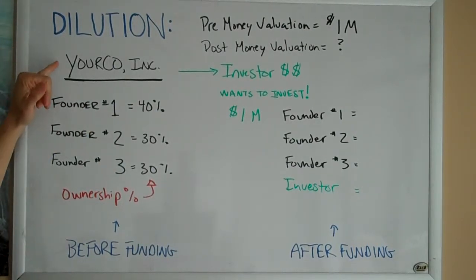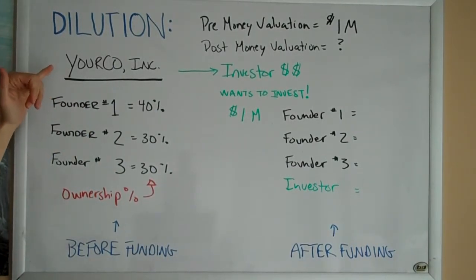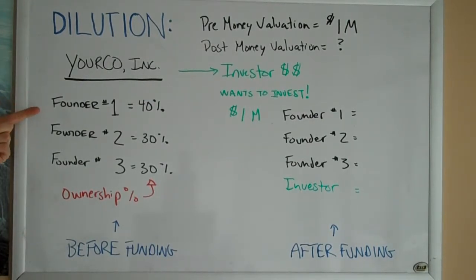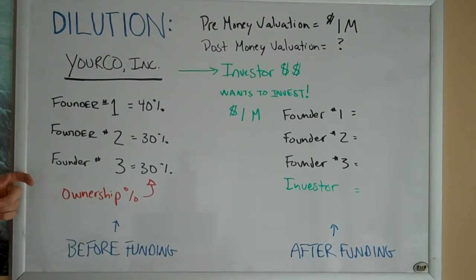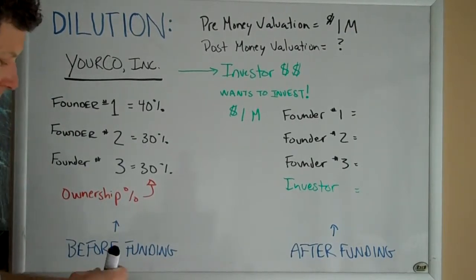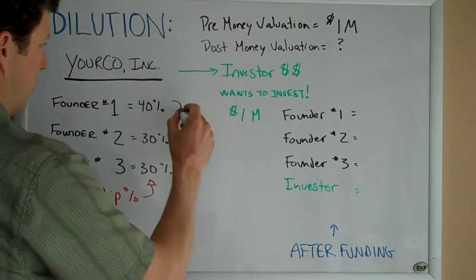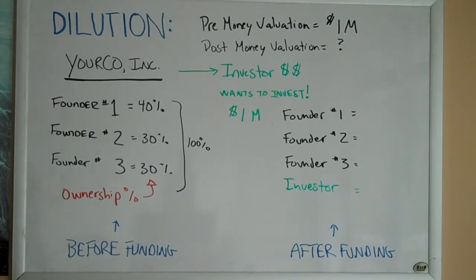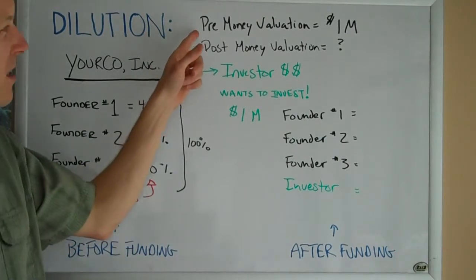In this example, your co. is incorporated and these are the ownership percentages inside of your co. the day before they raise funding. Founder number one owns 40%, founder number two owns 30%, and founder number three owns 30%. These numbers add up to 100% of the company because they haven't taken on investment yet — remember, that's before funding.